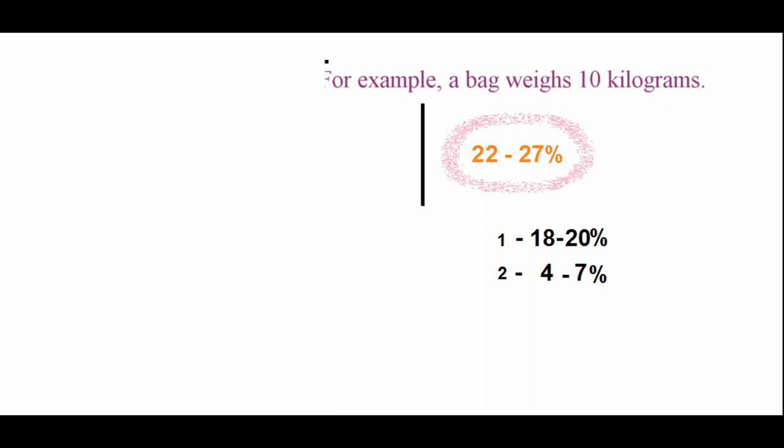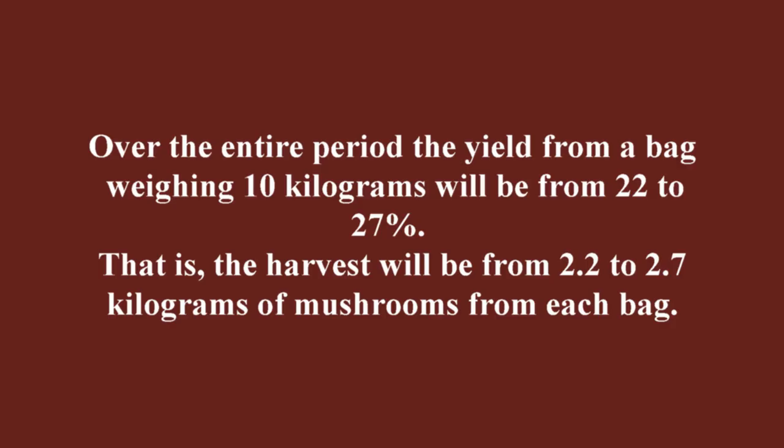From the second harvest you can collect from 4 to 7 percent of the weight of the block. That is, in this example, this figure will be from 400 to 700 grams of oyster mushrooms. Nobody collects the third flush in industrial mushroom growing, so over the entire period the yield from a bag weighing 10 kilograms will be from 22 to 27 percent — that is, from 2.2 to 2.7 kilograms of mushrooms from each bag.